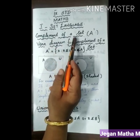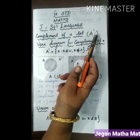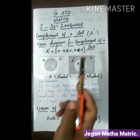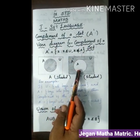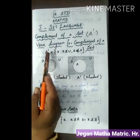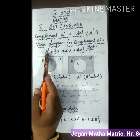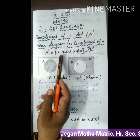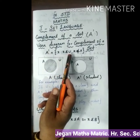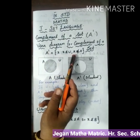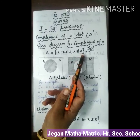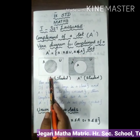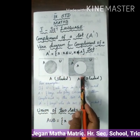Complement of a set A — the Venn Diagram for complement of a set is represented here. The complement of set A is defined as: A' is equal to the set of X such that X belongs to U and X does not belong to A. This shaded portion is A and this unshaded region is A'.